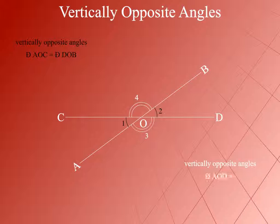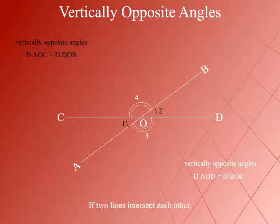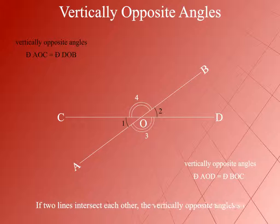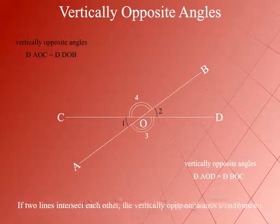Angle AOD and Angle BOC form another pair of vertically opposite angles, which are equal. Angle AOD is equal to Angle BOC. If two lines intersect each other, the vertically opposite angles so formed are equal.